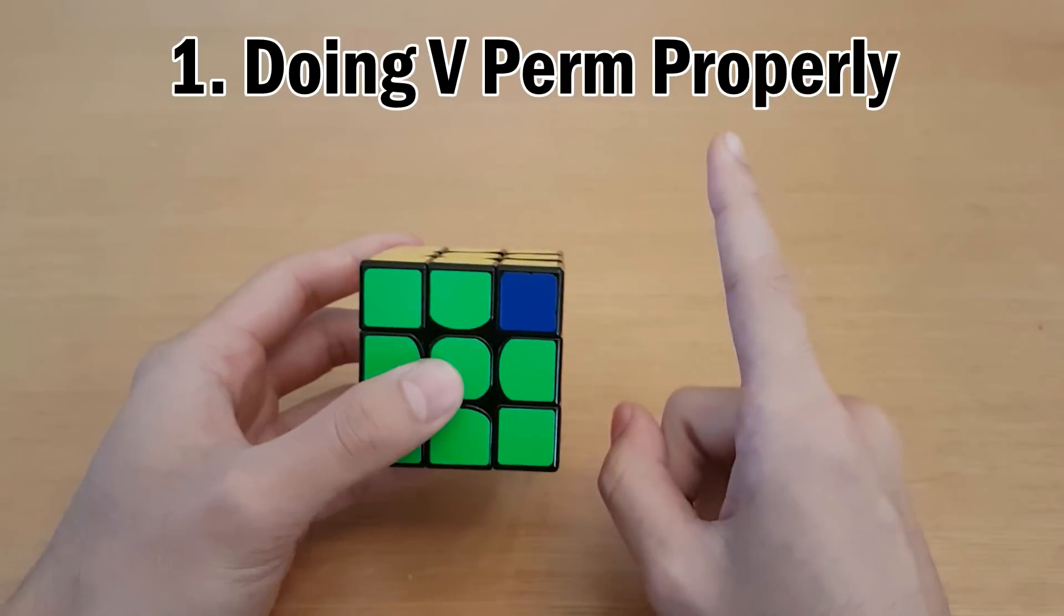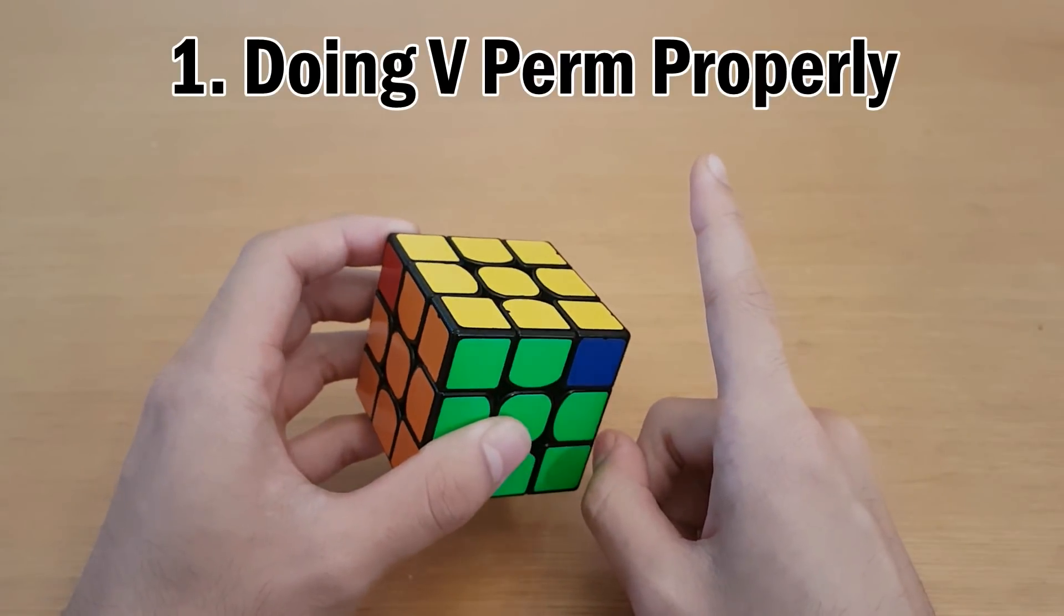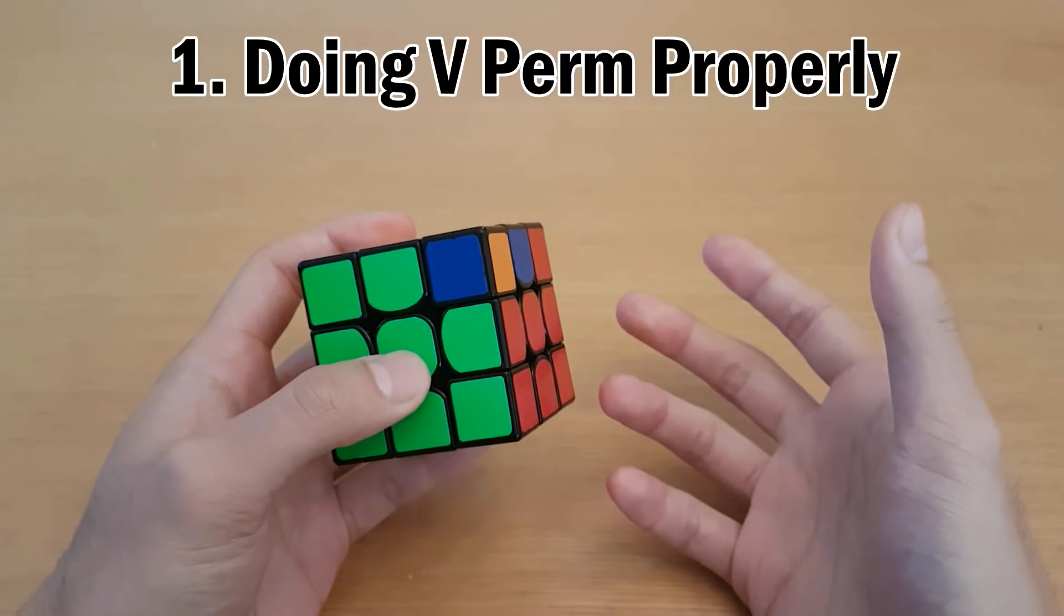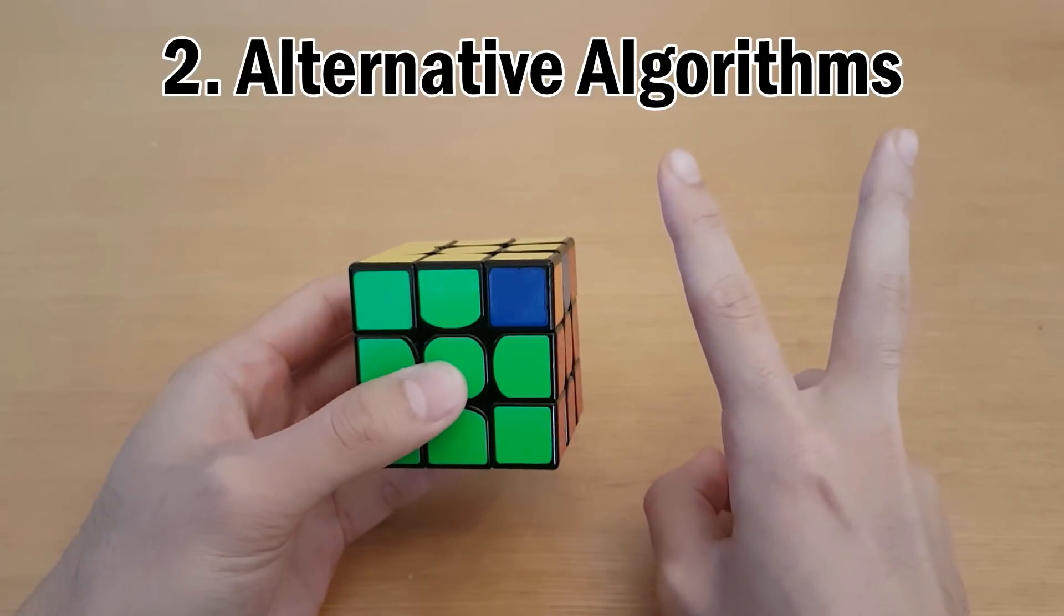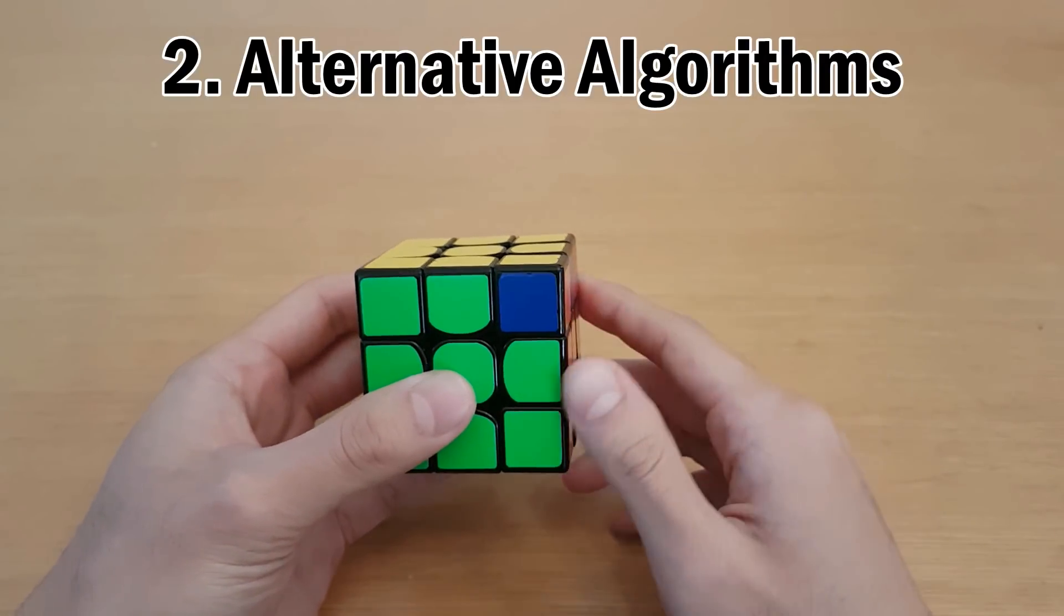So I'm going to be talking about two things. Number one is to make sure you're doing your V-perms properly, that is to make sure you're doing all the finger tricks correctly. And the second thing I'm going to talk about is alternative algorithms you could use.